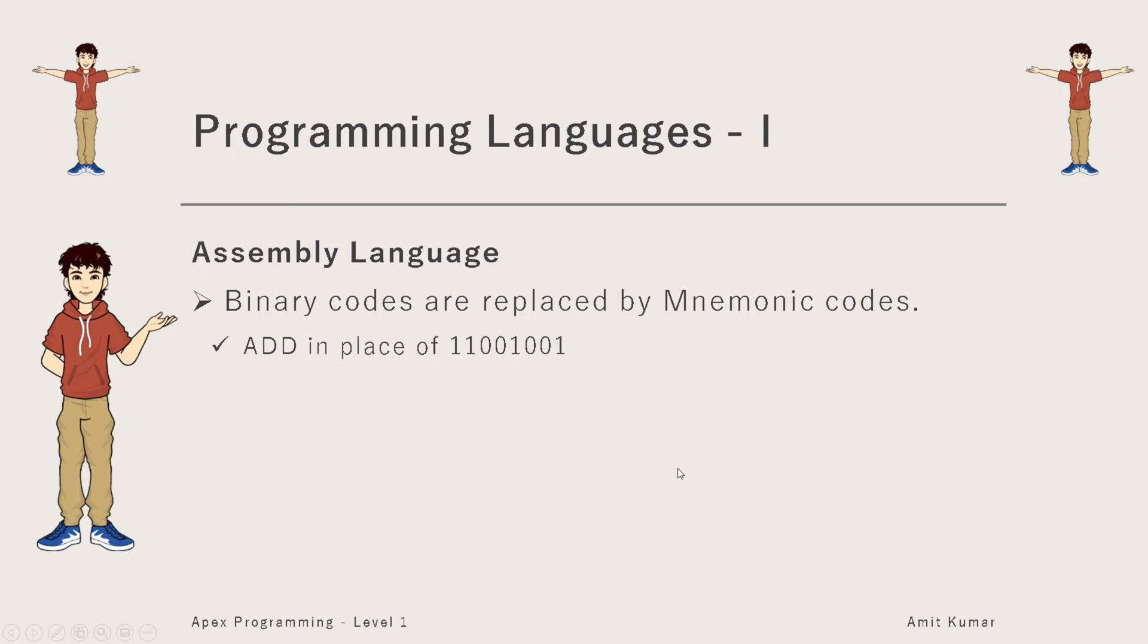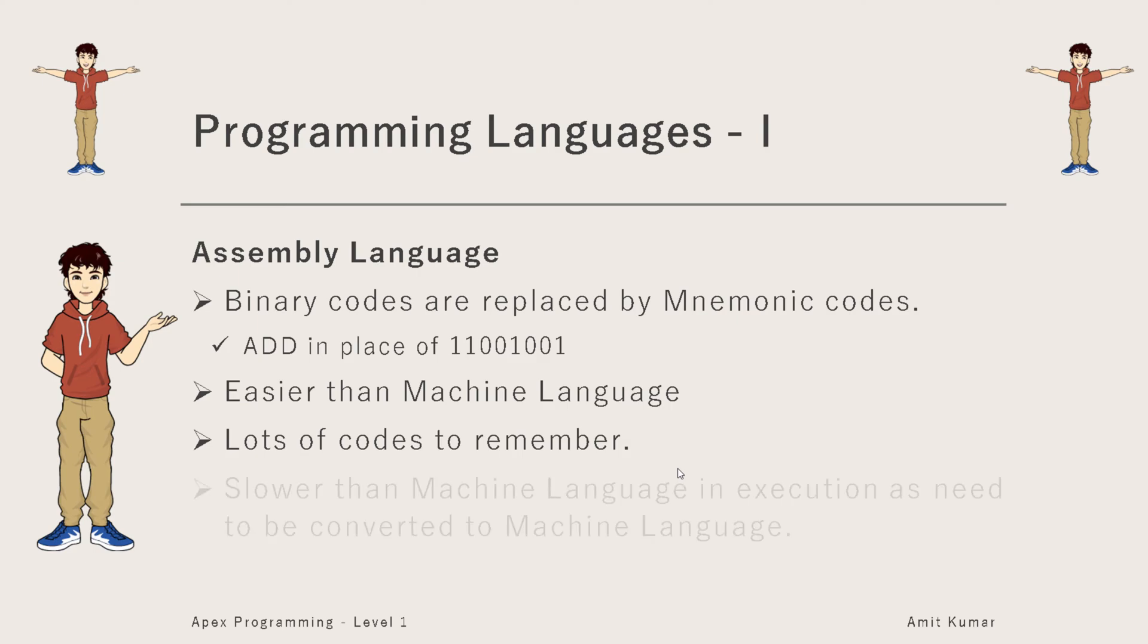So what is the advantage of assembly language? Definitely it's easier than machine language, but there were lots and lots of codes to remember. And that's not all - it's lower than machine language in execution. Why? Because machines still understand machine language only. So whatsoever we have written in assembly language needs to be converted to machine language so that we can provide those instructions to the machine. So that makes programming a bit slower in assembly language.